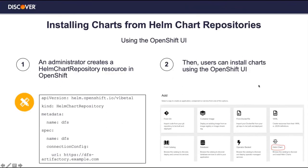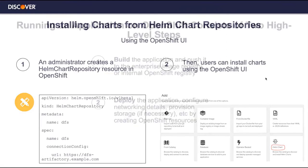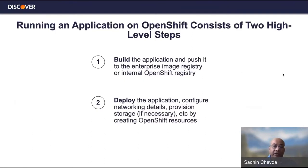There's also a way to use the OpenShift UI, which we're going to explore in the future. The UI provides a nice way to configure the Helm chart, and application teams can utilize those Helm charts through the OpenShift UI. Running an application on OpenShift involves two high-level steps: build and deploy. We're targeting specific Helm charts for this build and deploy process. Building the application means building the application image and pushing it to the OpenShift registry. For deployment, it pulls from the OpenShift registry and deploys on OpenShift, creating the set of resources on the platform.